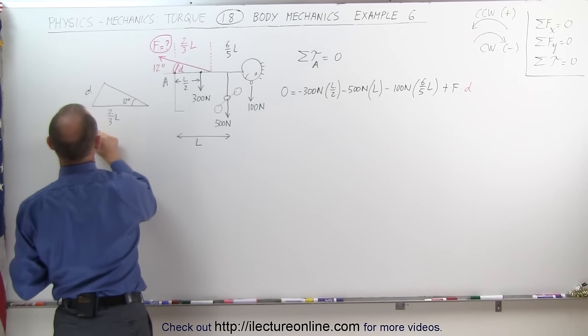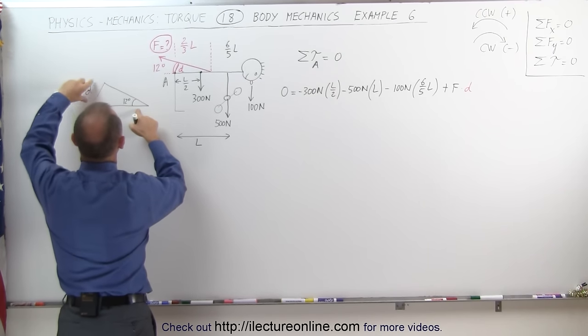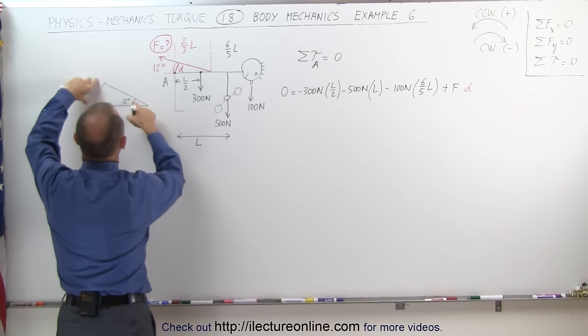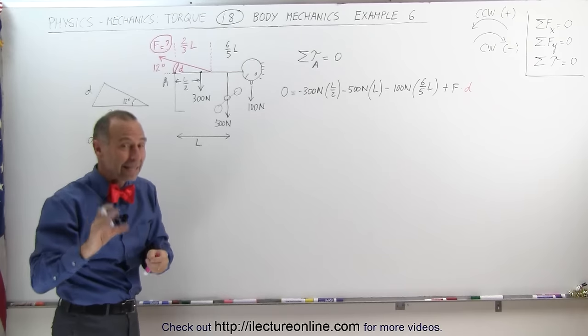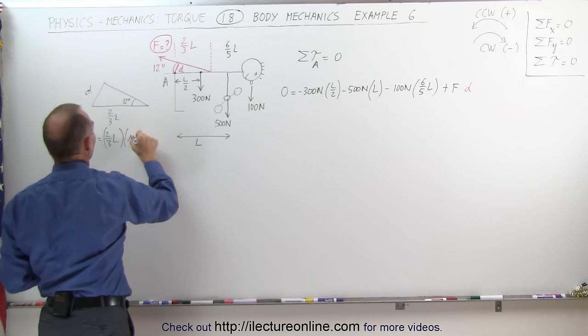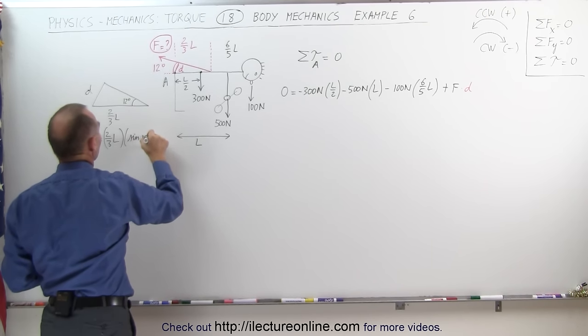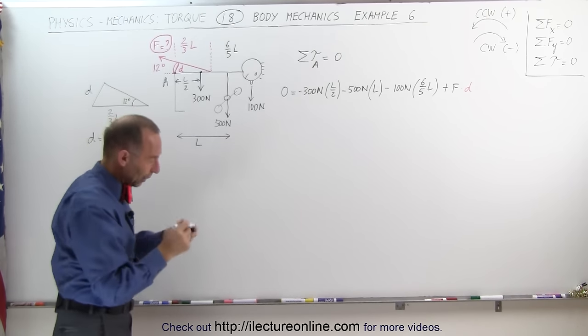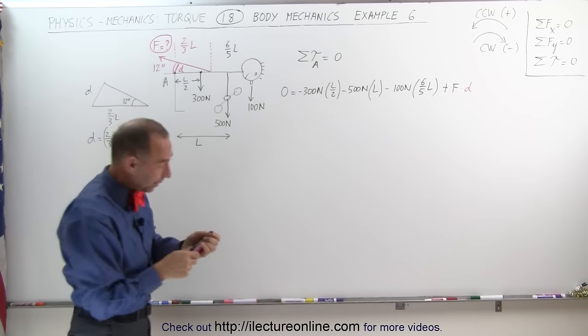Which means that D is equal to the hypotenuse times the sine of the angle of 12 degrees, because we can see here that D is directly opposite the angle. That would be two-thirds L times the sine of 12 degrees, and that will be D right there when we plug that into the equation. Let's go ahead and do that now.